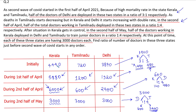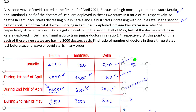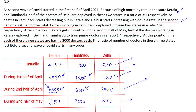So initially, the number of doctors in Kerala, Tamil Nadu, and Delhi were 4440, 720, and 3840 respectively. Now we need to find the ratio. The ratio is 4440 : 720 : 3840.